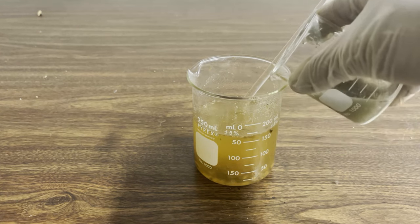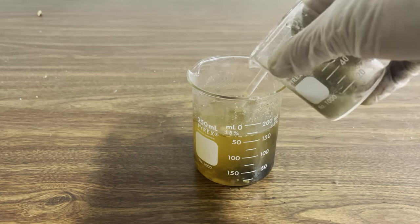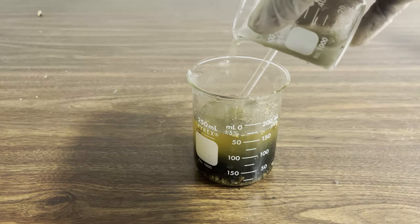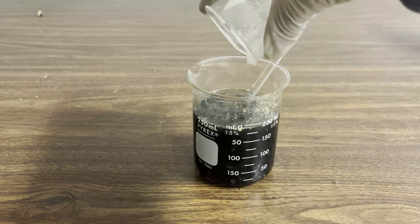After waiting a bit more, I add all of the ferrous sulfate into the gall mixture. The ferrous sulfate instantly causes the solution to turn black.